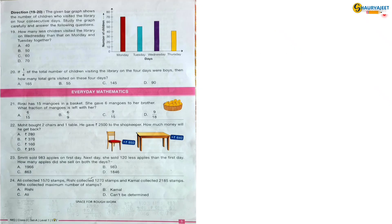Direction for question 19 to 20. The given bar graph shows the number of children who visited the library on 4 consecutive days. Study the graph carefully and answer the following questions. Number of students visited the library: On Monday 70, on Tuesday 50, on Wednesday 60, on Thursday 40. So total number of students visited the library is 220.